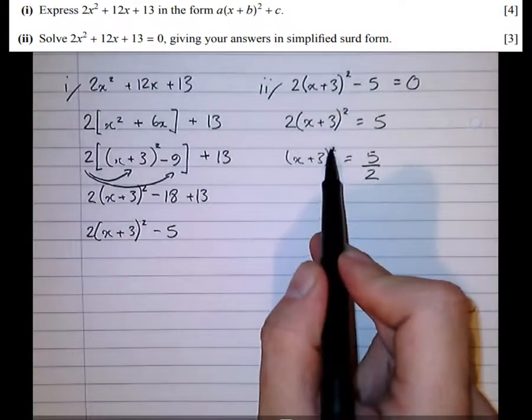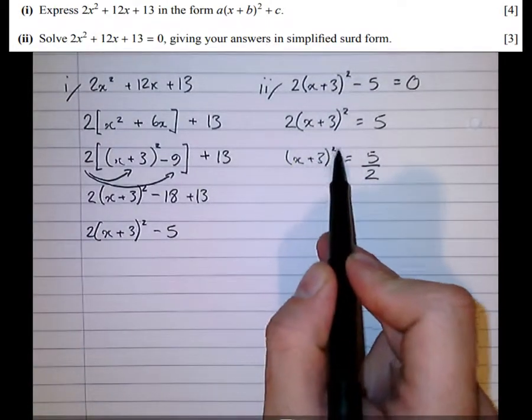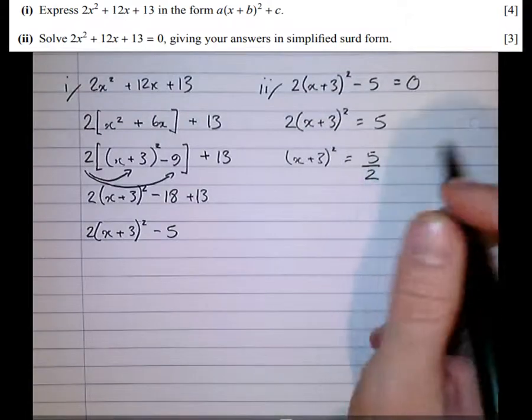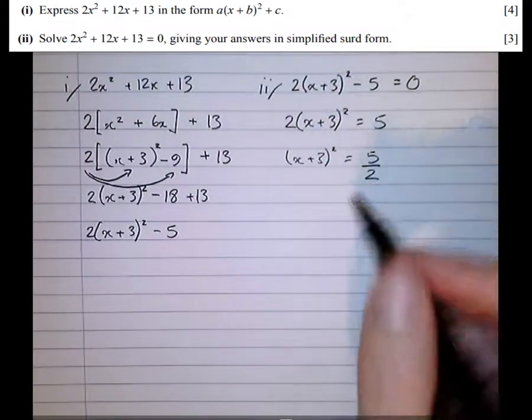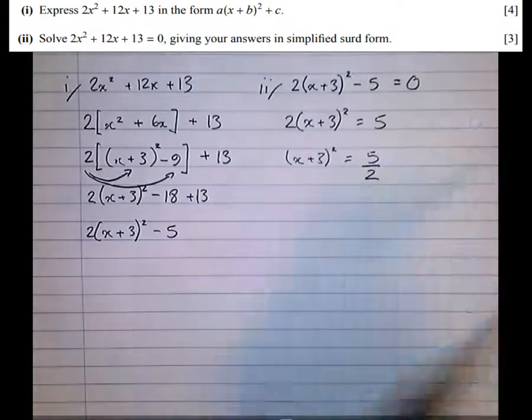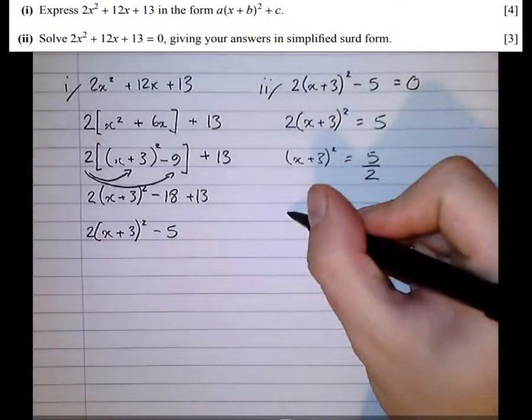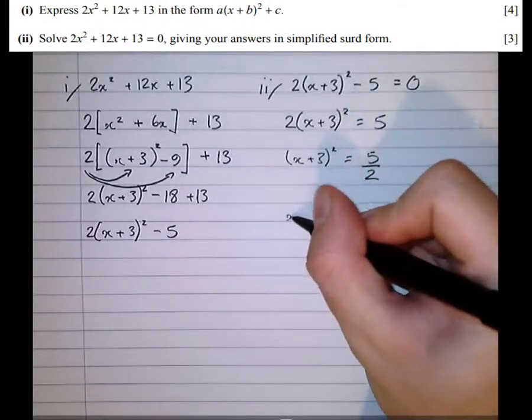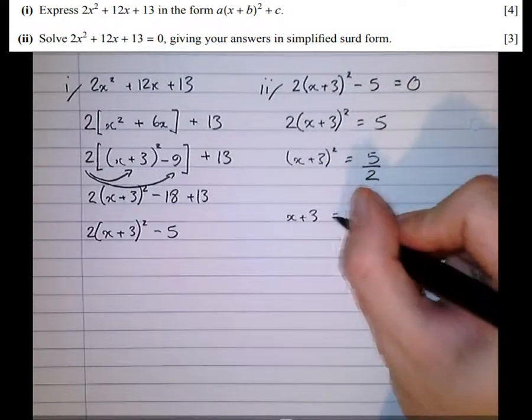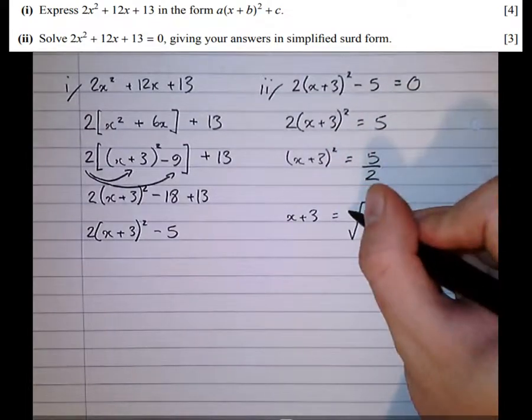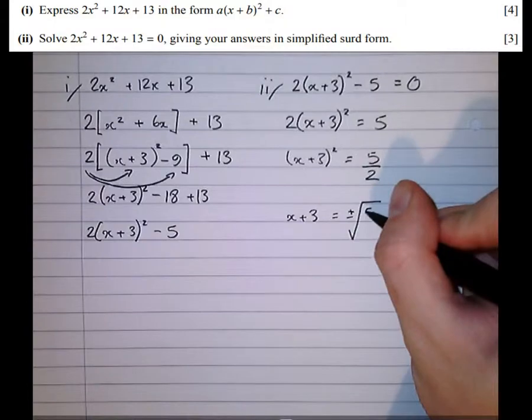And notice now that we've got (x + 3)². Well, we can undo that squared by simply square rooting, which now works because we've got all the other terms over to the other side. So square rooting the left-hand side, we get x + 3. And square rooting the right-hand side, we get ±√(5/2).